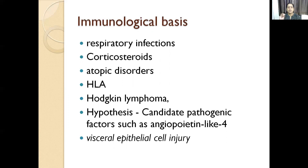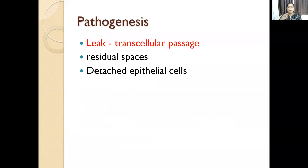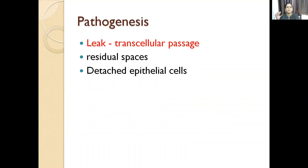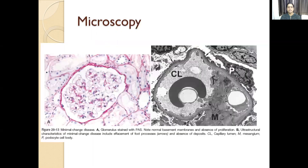What is happening here is a visceral epithelial cell injury. This is the pathogenesis. When there is an antigen-antibody reaction causing visceral epithelial cell injury, the first change we see is effacement of the foot processes. Because of that, there is this plasma protein leak, which may be in the form of transcellular passage or through the residual spaces formed because of the detached epithelial cells.